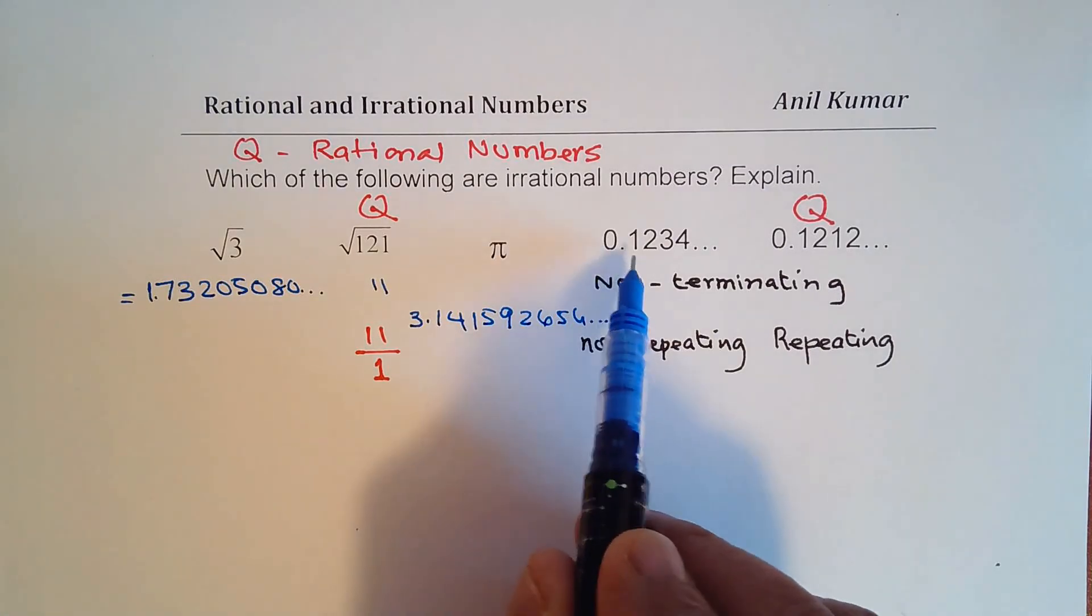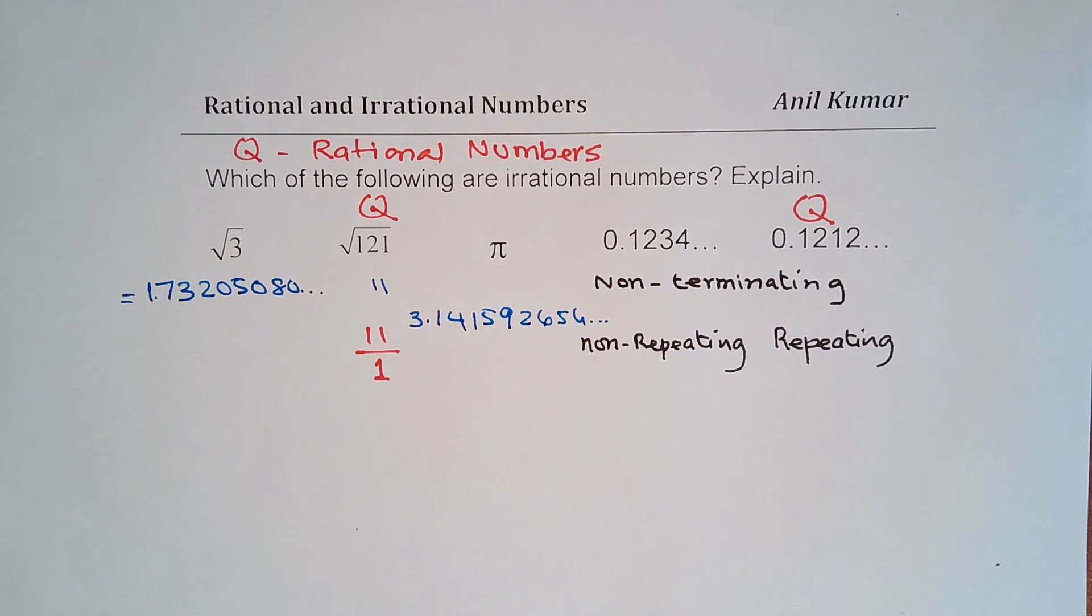Similar is the case with this number, 1, 2, 3, 4. So it does have a pattern. Every number is increasing by 1, right? But still, we are unable to write this as a fraction. So that may not be a rational number.